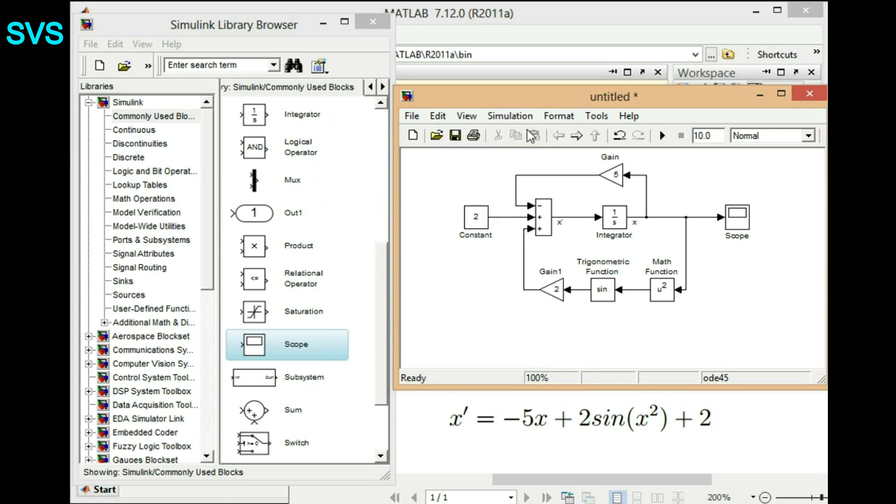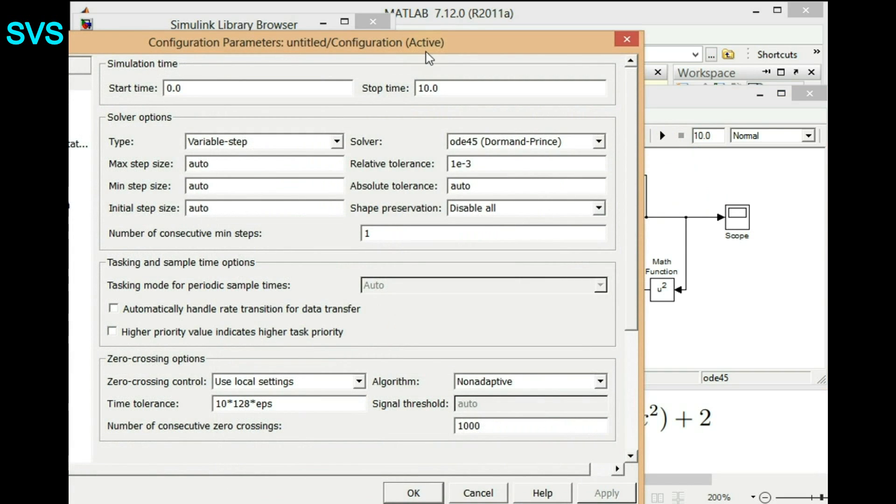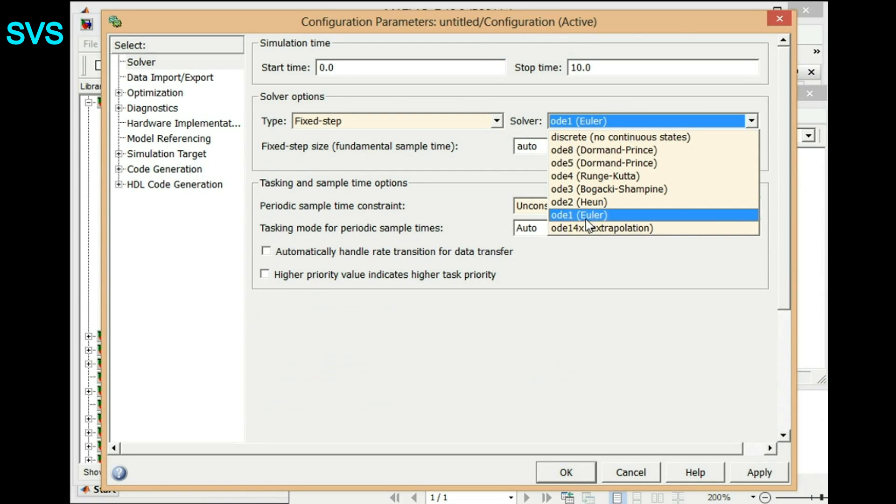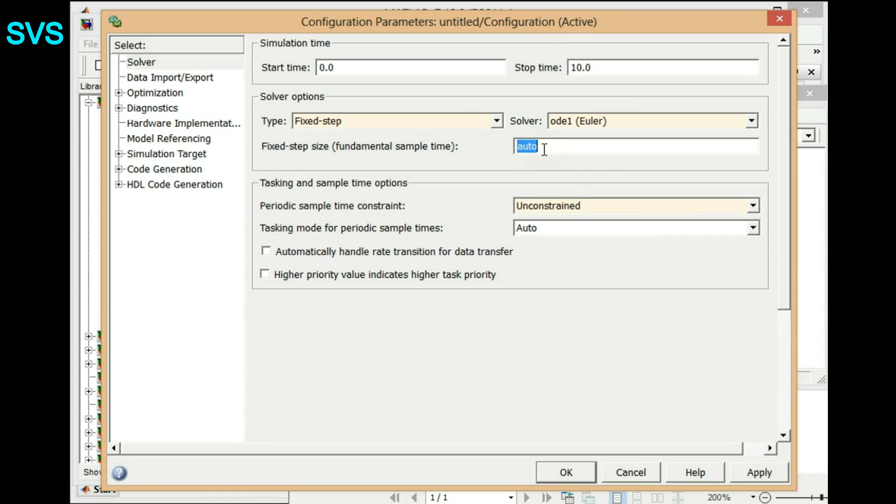So we'll be choosing first method - we'll be using Euler ODE1 which we say fixed step method. It's one of the simplest ways to understand theoretically also. So we'll just choose a step size of, let's say, 0.001. And we'll reduce the stop time for time being and we'll set it to single tasking and then we'll apply and okay.